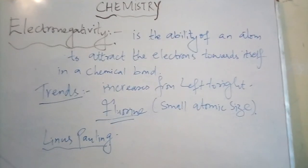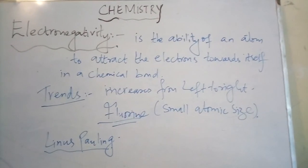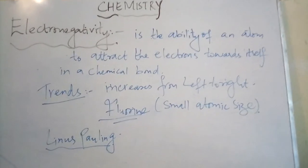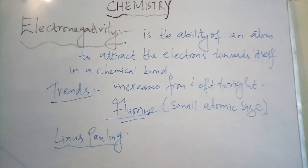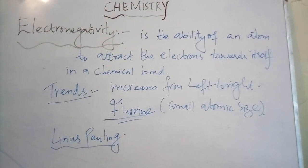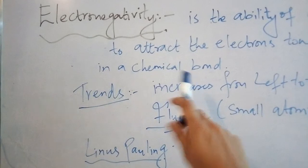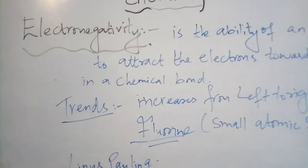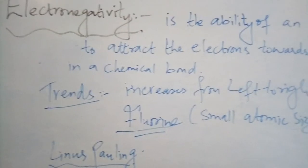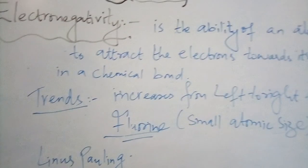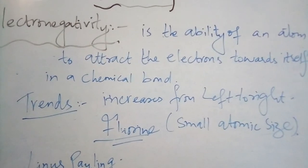Assalamu alaikum students, today we will study the topic of Electronegativity. Electronegativity basically is the ability of an atom to attract the electrons towards itself in a chemical bond. How much an atom has the ability to attract electrons in a chemical bond, that is called Electronegativity.